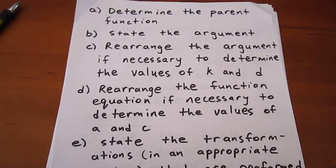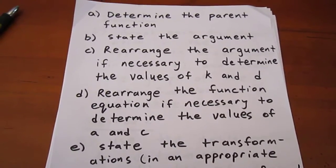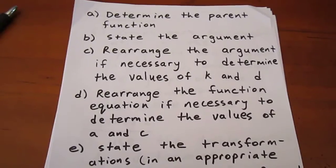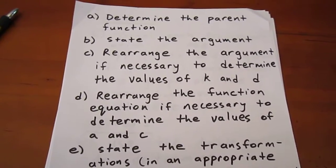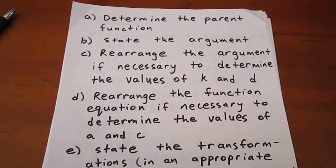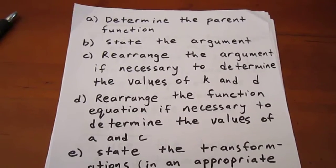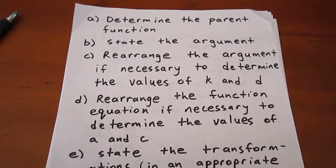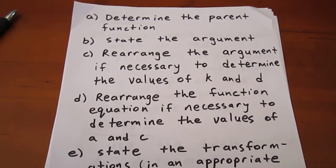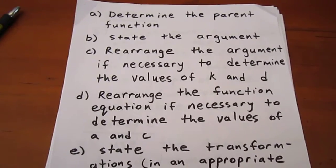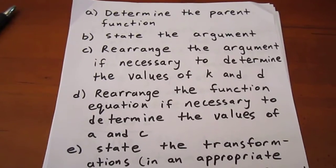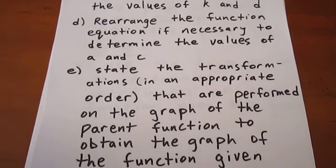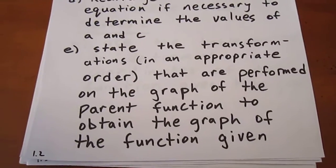We will determine the parent function, state the argument of that function, rearrange the argument if necessary to determine the values of k and d, which give information about horizontal reflections, stretches or compressions, as well as possible translations. Then we'll rearrange the function equation if necessary to determine the values of a and c, and then we'll state the transformations in an appropriate order.